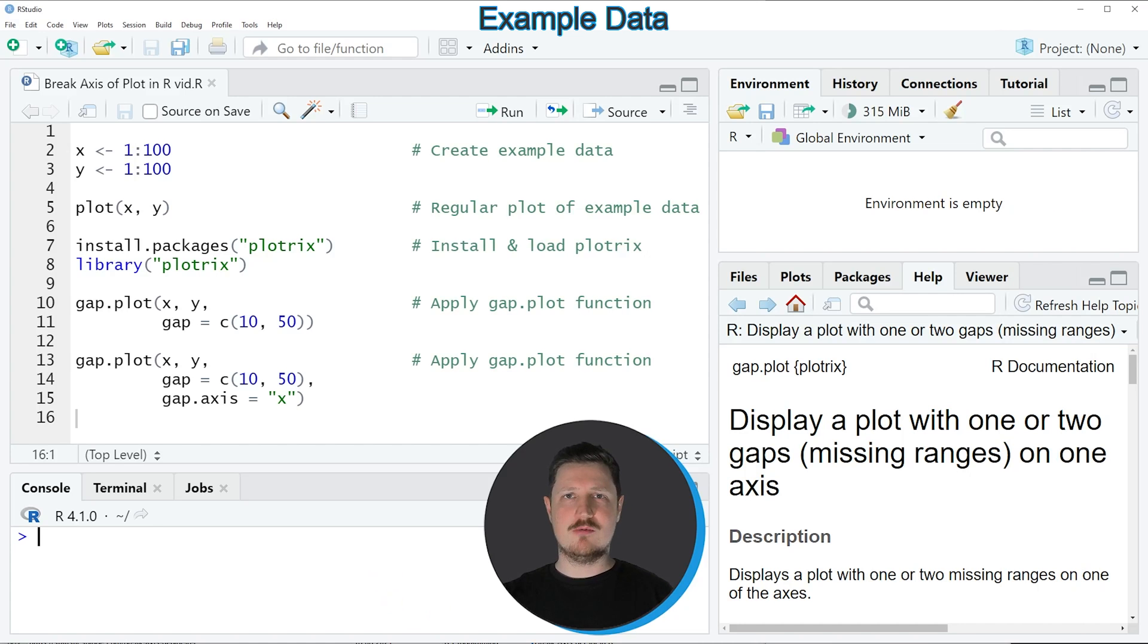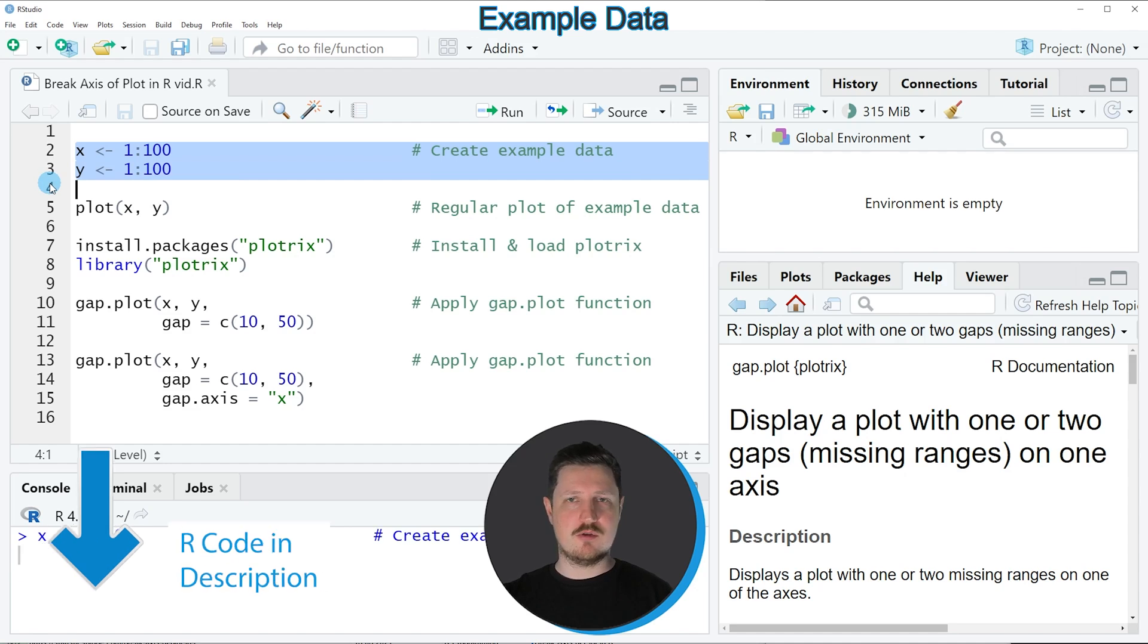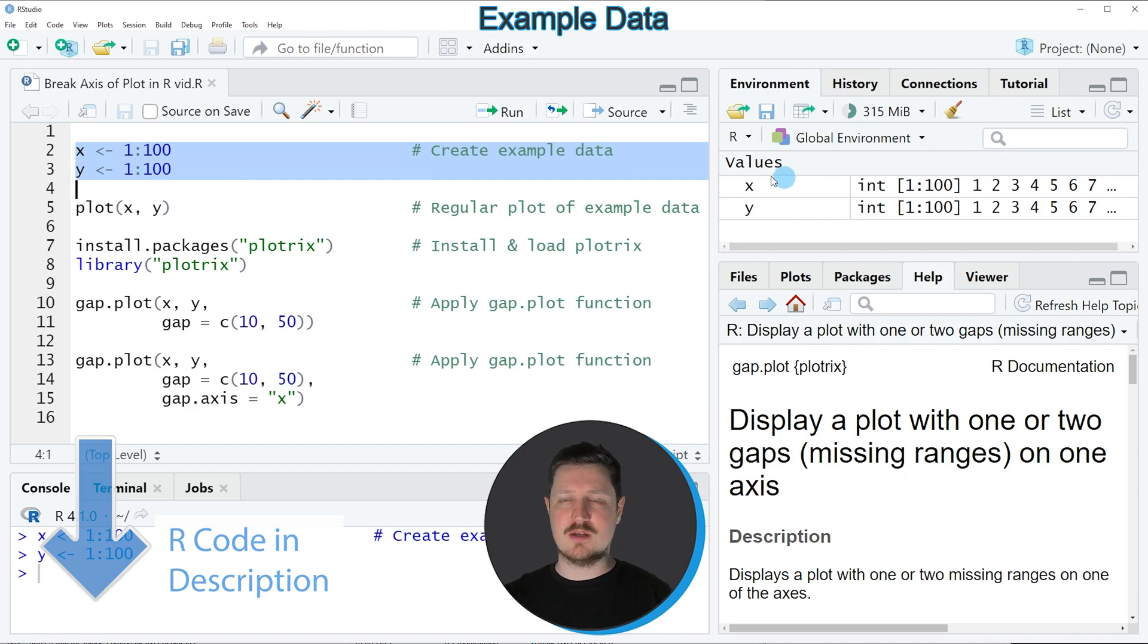In this video I will show you several examples and all of these examples are based on the data objects that we can create with lines 2 and 3 of the code. So if you run these lines of code, you can see at the top right of RStudio that two new vector objects are appearing which are called X and Y and both of these data objects are ranging from 1 to 100.